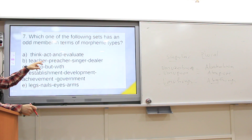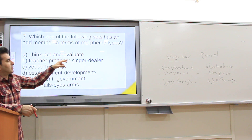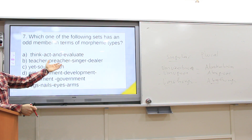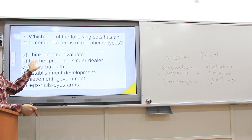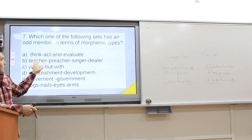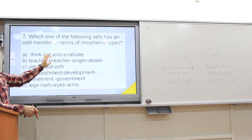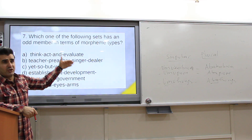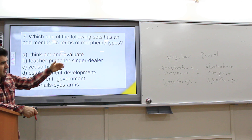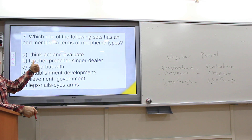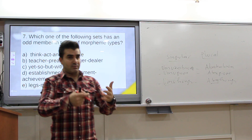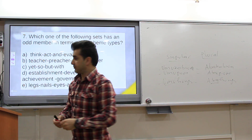Teacher, preacher, singer, dealer — the bases are teach, preach, sing, deal. These are free lexical morphemes combined with a bound derivational morpheme '-er.' For words like establishment and development, it is a derivational bound morpheme added to a free morpheme.